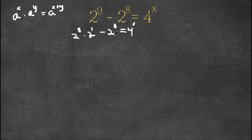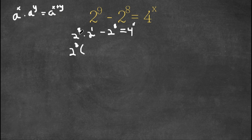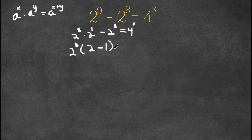Now since we have 2 terms with 2 to the power of 8, I'm going to factor 2 to the 8th out of this expression. If we take out 2 to the power of 8 from 2 to the power of 8 times 2 to the power of 1, we're simply left with 2 to the power of 1, which is 2. And minus 2 to the power of 8 divided by 2 to the power of 8 is 1. This is still equal to 4 to the power of x.